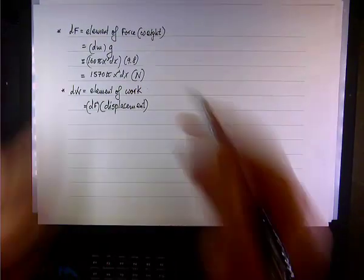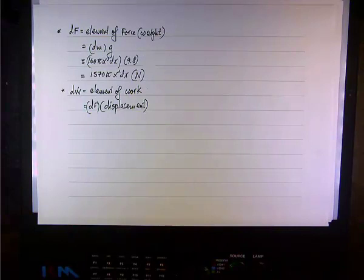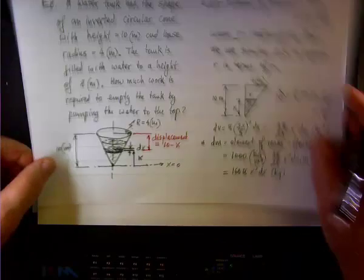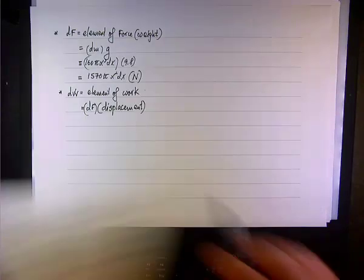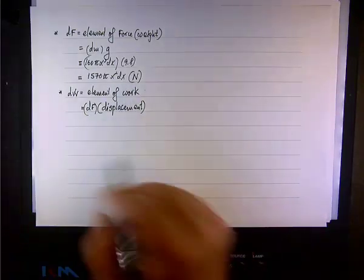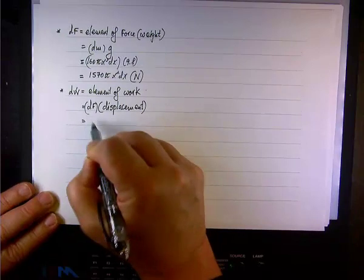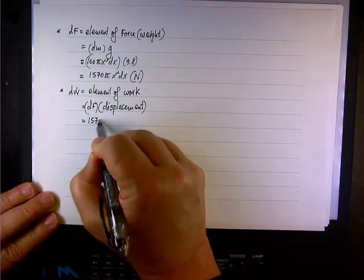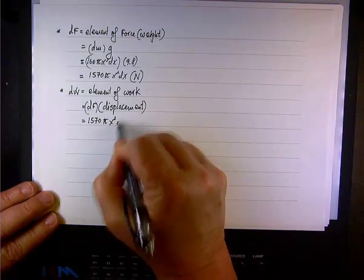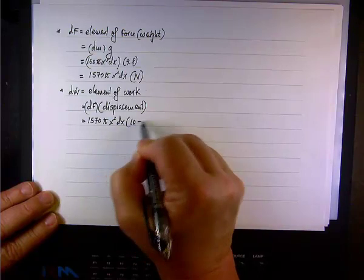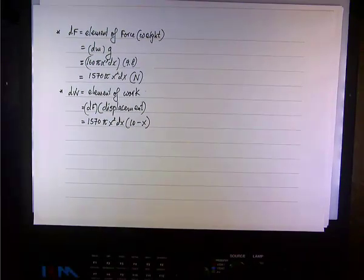And we discussed the displacement when we did, when we looked at the original sketch. The displacement in red is 10 minus x. So whatever we have here, it will be multiplied by 10 minus x.